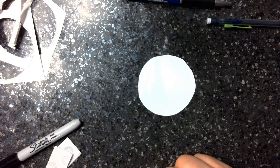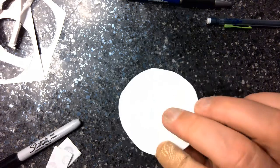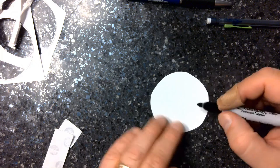To make the second kind of Thaumatrope, take a single circle and draw half of an image on one side.